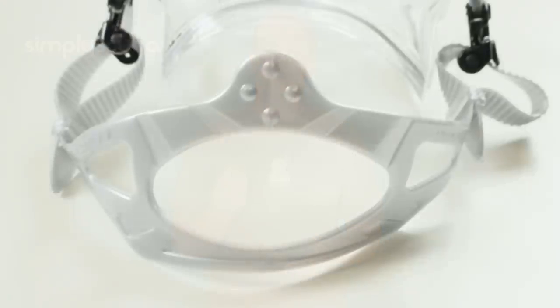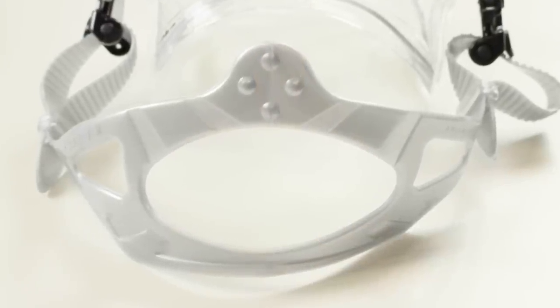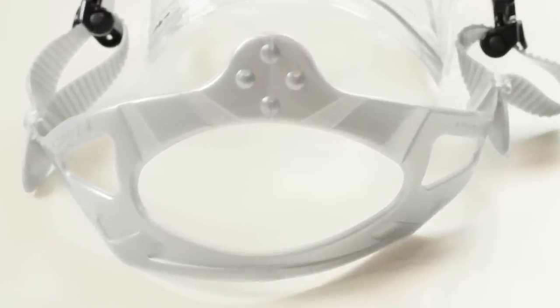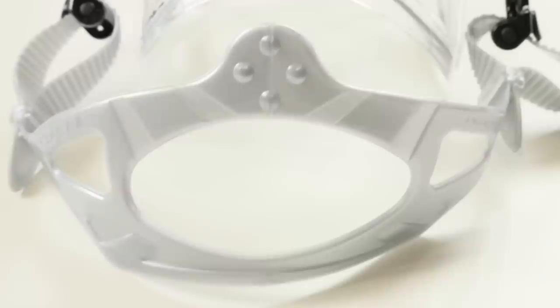A silicone strap secures the mask to the head and maintains contact between the skirt and the skin. Using silicone provides a degree of stretch and flexibility that doesn't hinder movement or affect the integrity of the skirt seal.